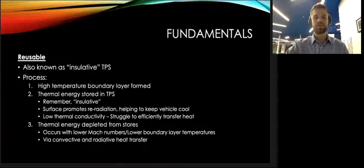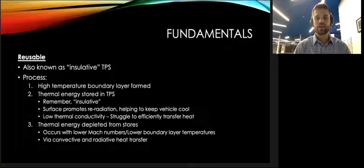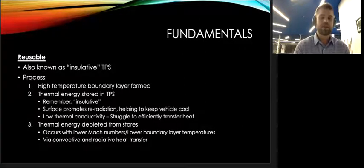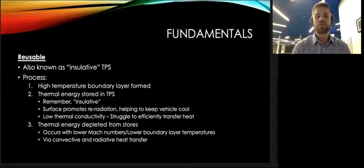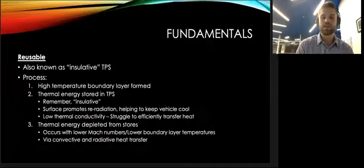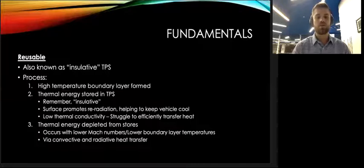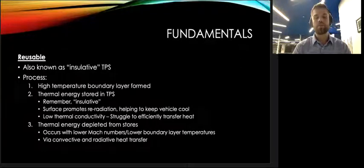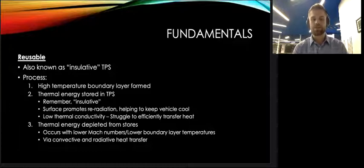Now, moving onwards to reusable materials, these are sometimes called insulative materials, just based on the fact that the main way in which they work is holding on to heat. While it's undergoing these high heat loads, it's really not getting rid of any of that energy. It's actually storing this energy. The only way it's disposing of this energy is via re-radiation. High emissivity coatings is a huge thing for reusable thermal protection systems. And the energy that is sucked up by these thermal protection systems is only depleted when lower Mach numbers or lower boundary layer temperatures are reached, and then the TPS can finally release all of this energy via convection or radiative heat transfer.